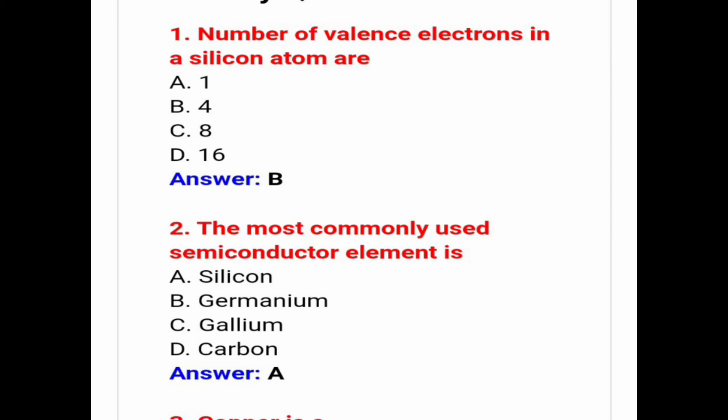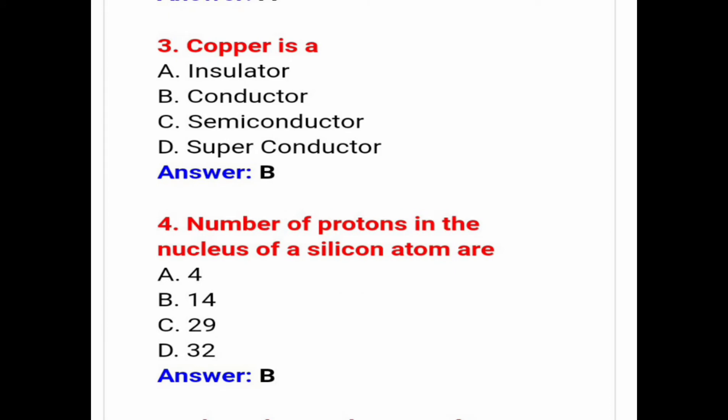The number of valence electrons in a silicon atom are 4. The most commonly used semiconductor element is silicon. Copper is a conductor because copper is not an insulator, not a semiconductor, and not a superconductor — so answer B, it is a conductor.